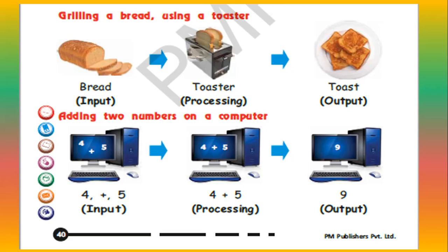Now one more example — grilling bread using a toaster. The bread we use for grilling is the input. When we put the bread inside the toaster, the toaster will process it, so the toaster is working as a processor. What we get out of it is toast, so the toast is the output.